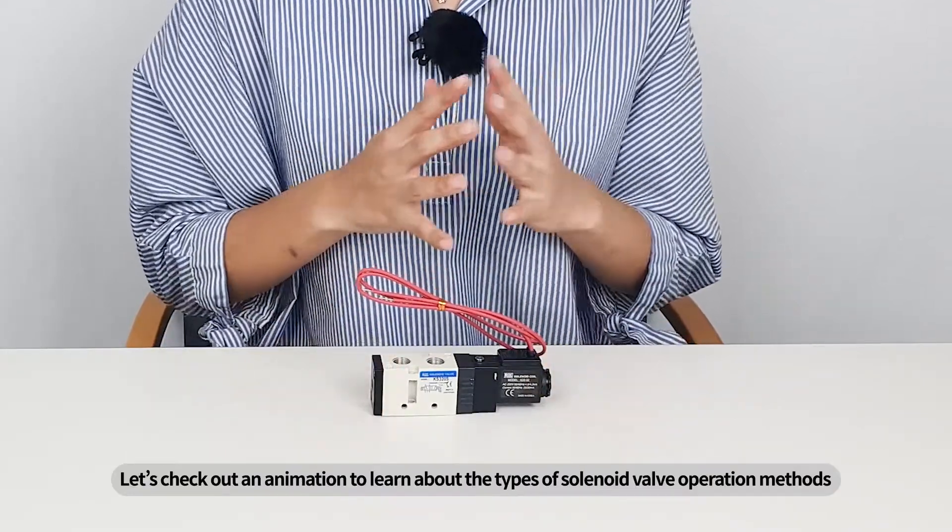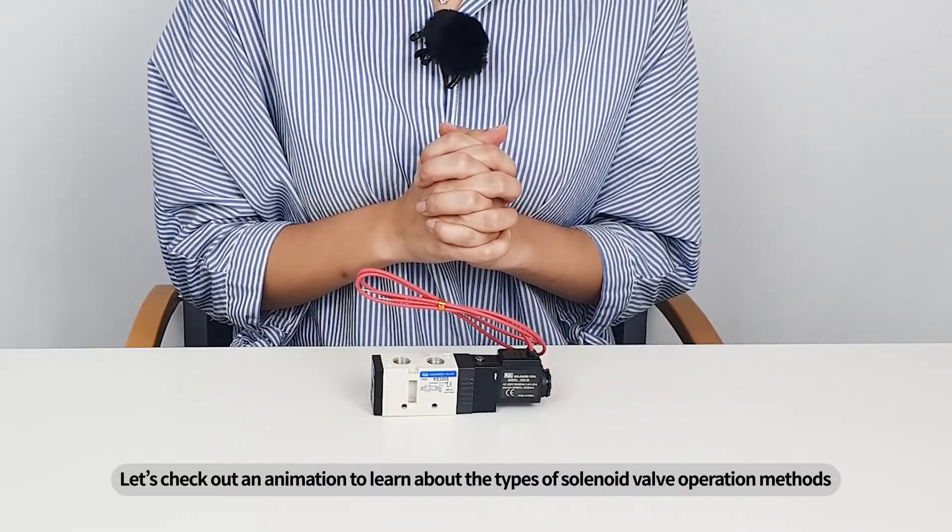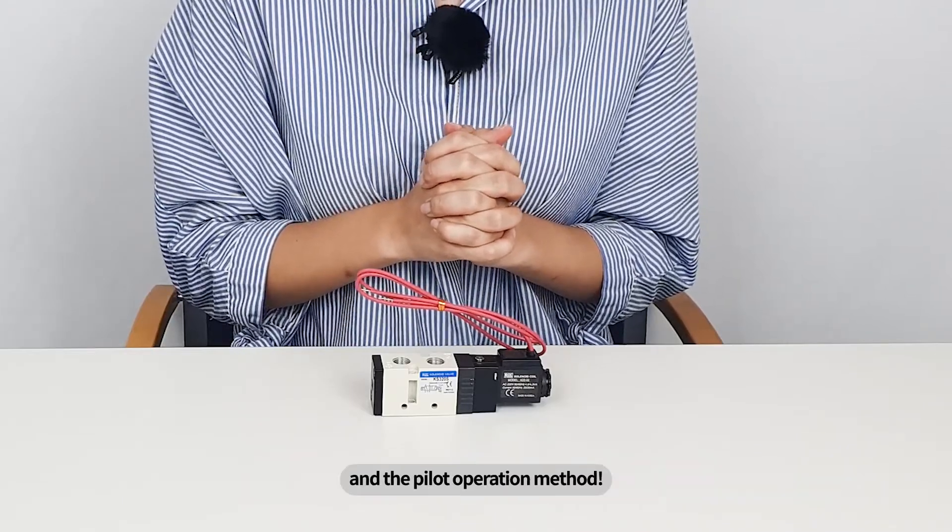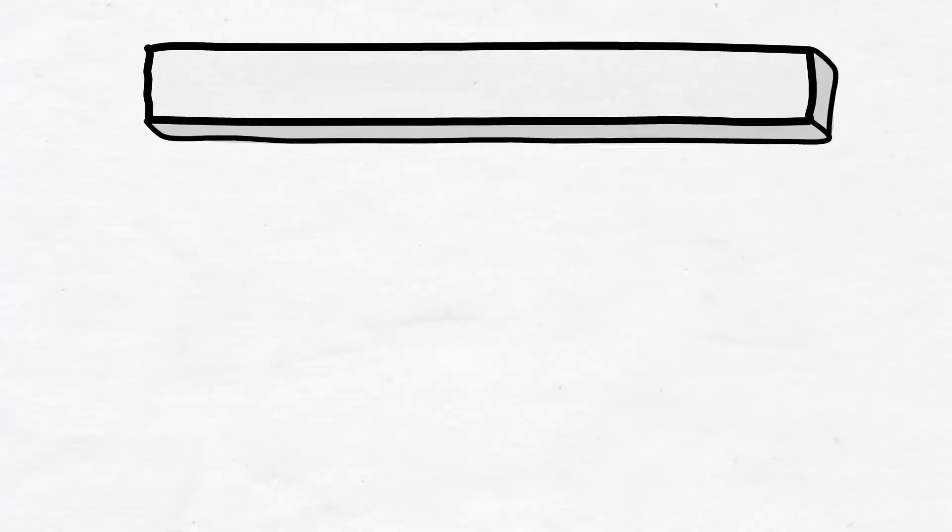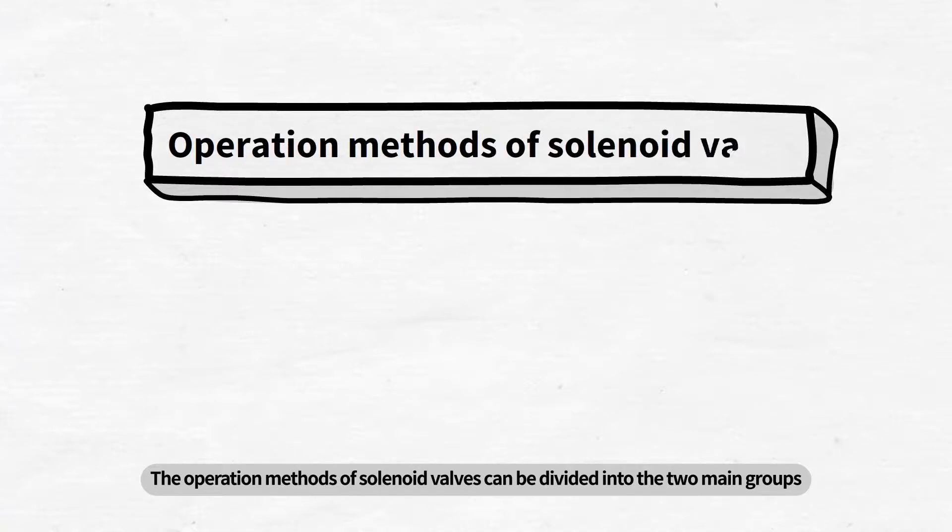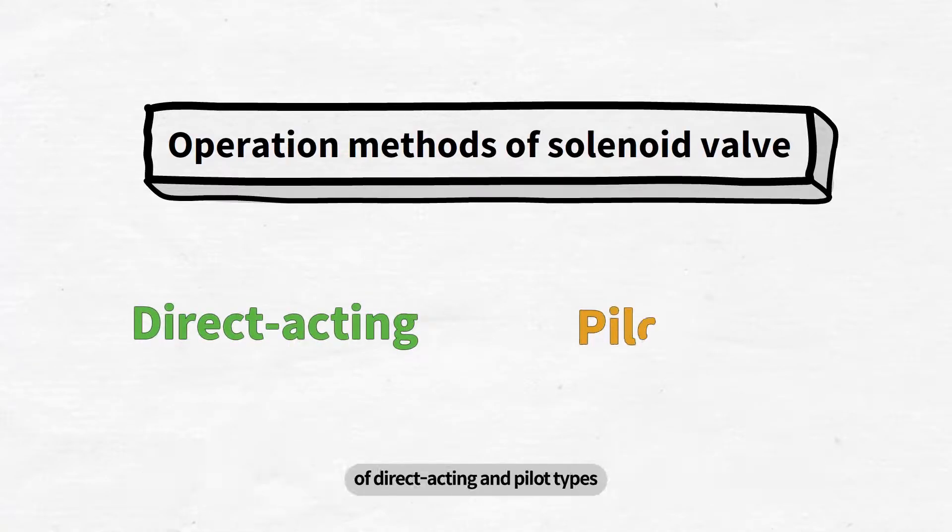Let's check out an animation to learn about the types of solenoid valve operation methods and the pilot operation method. The operation methods of solenoid valves can be divided into the two main groups of direct acting and pilot types. Today we will learn about the pilot operated method.